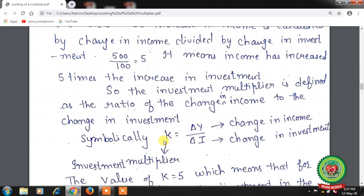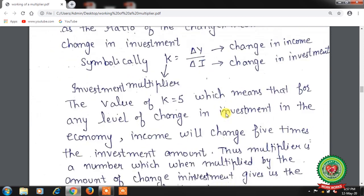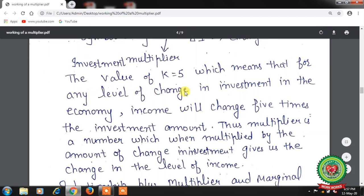Symbolically we write k = ΔY / ΔI, where k is the investment multiplier, ΔY is the change in income, and ΔI is the change in investment. A value of k = 5 means that for any given change in investment in the economy, income will change 5 times the investment amount. Thus the multiplier is a number which, when multiplied by the change in investment, gives us the change in the level of income.